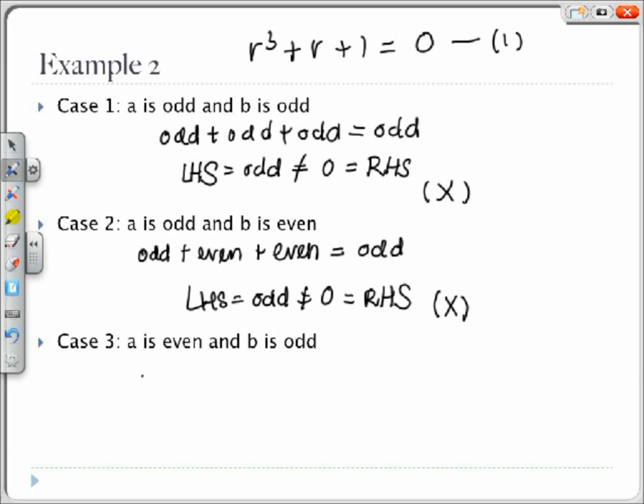Case 3, we have a is even and b is odd. So we get an even plus an even plus an odd, which is odd, which is still not equal to 0. Therefore case 3 is also not the case. And we have no case where a and b are both even because the fraction a over b is in simplest terms. So they cannot be even at the same time.